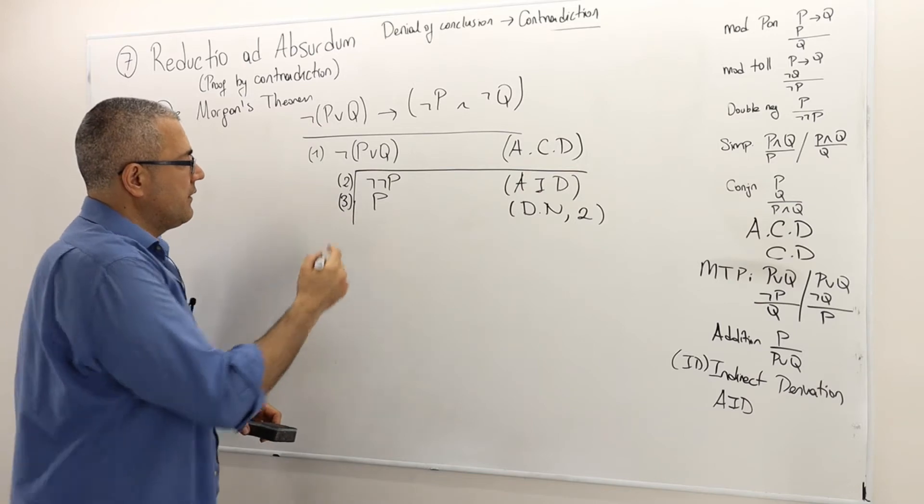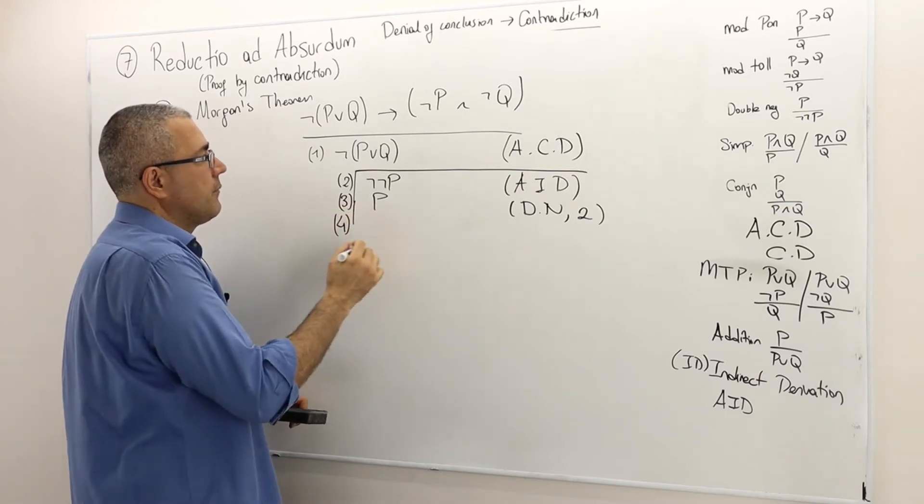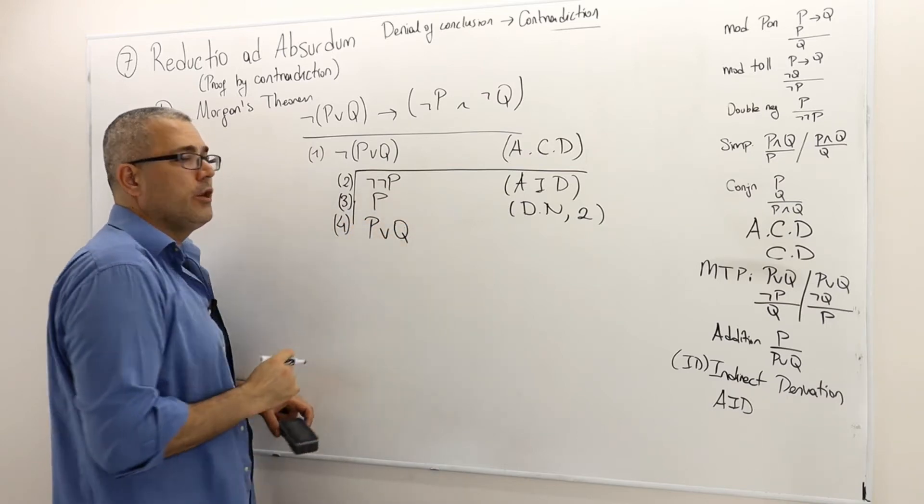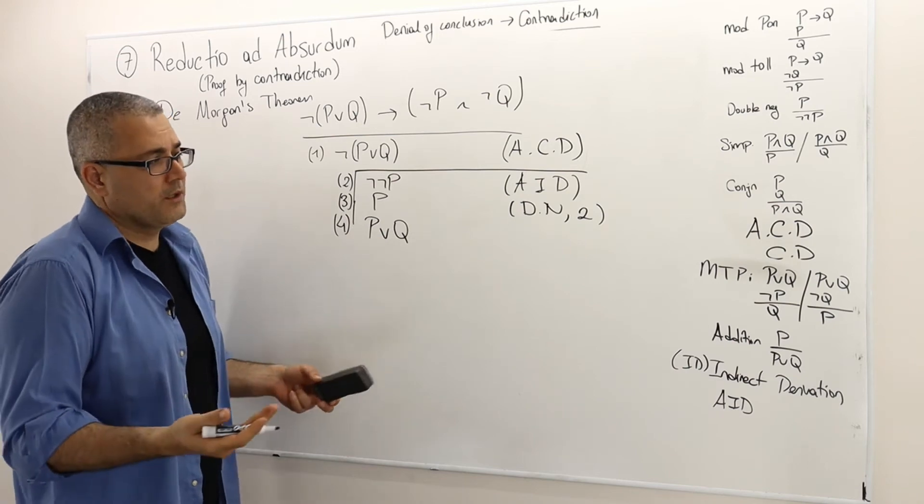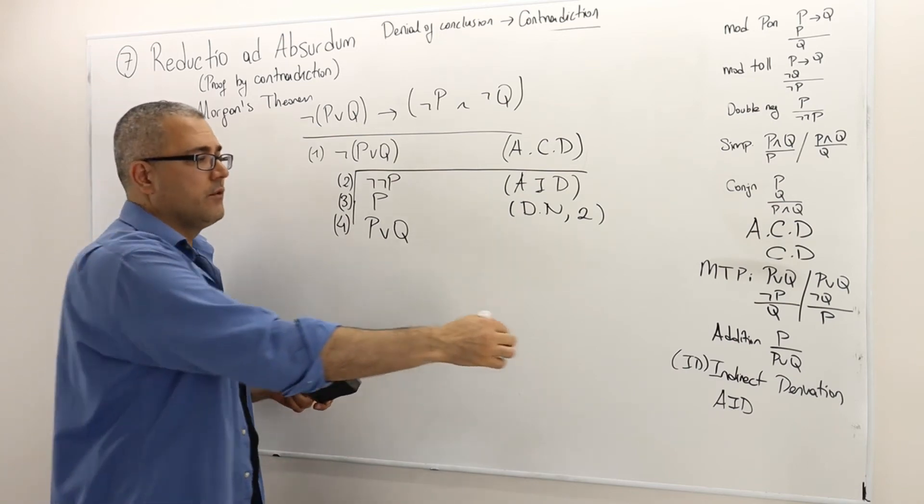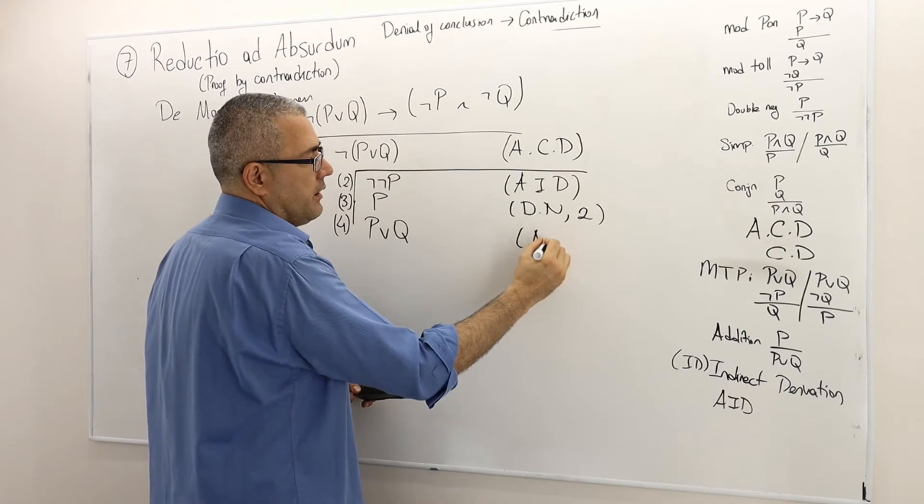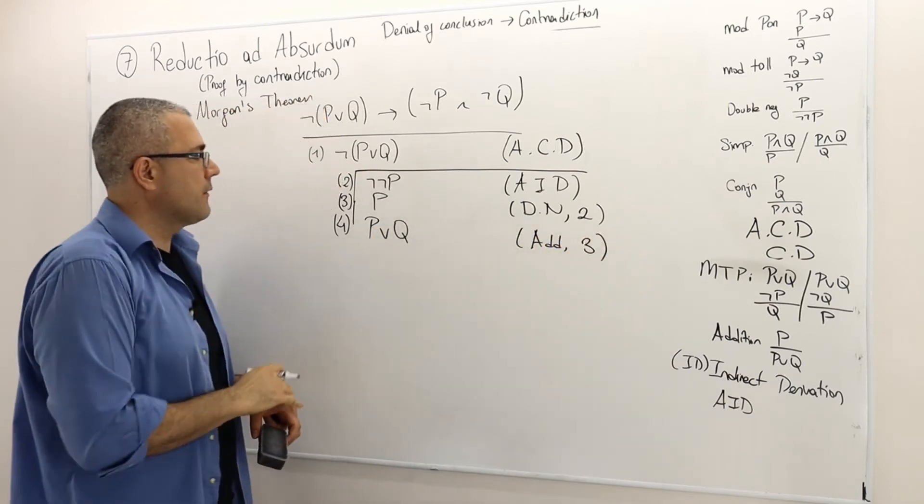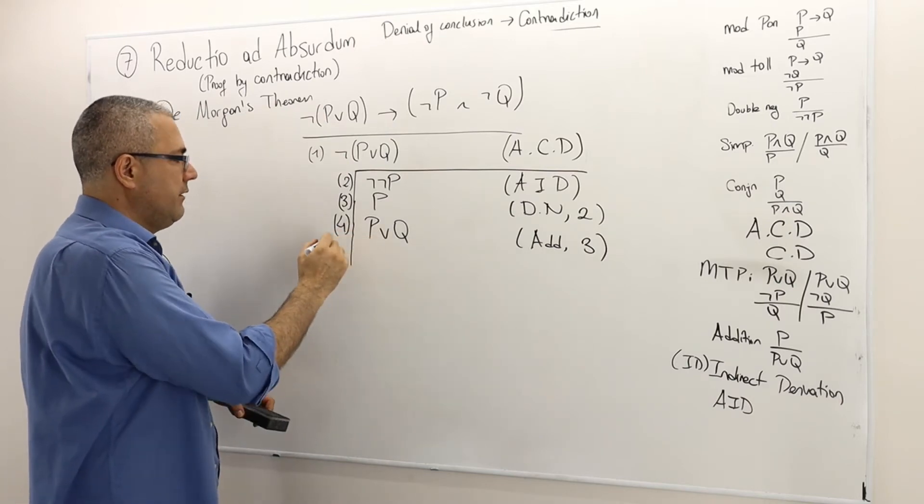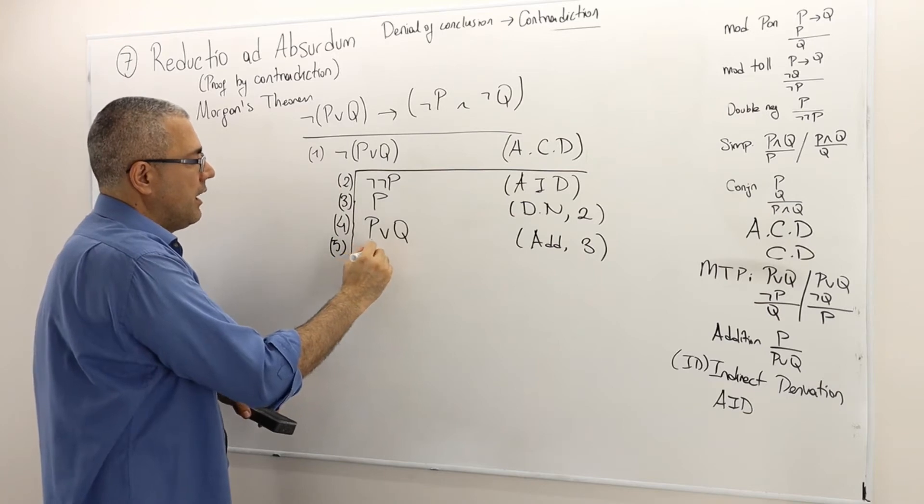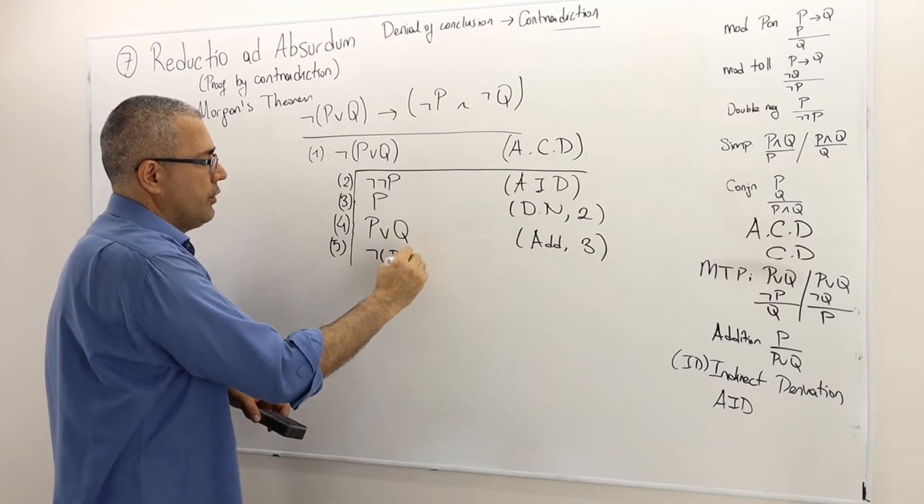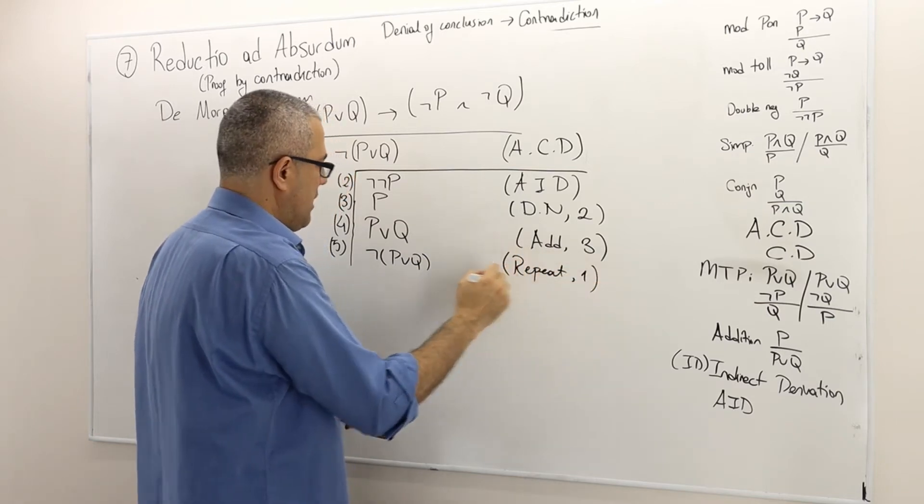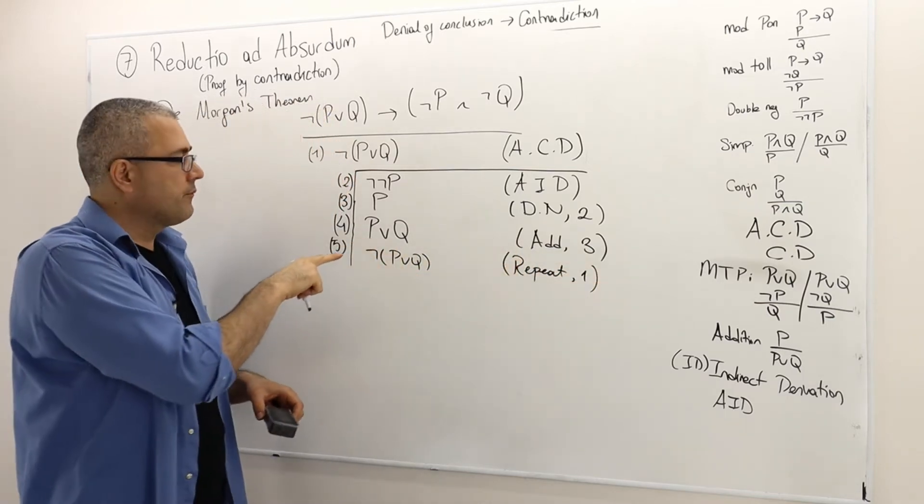Well, I know that because this is a true statement, whether Q is true or false, P or Q must be true. This is the rule addition, addition to the line three. Okay, what do I get? Well, here you go. I got the contradiction. Remember, I had not P or Q. So I just repeat my statement in line one. I achieved P or Q.